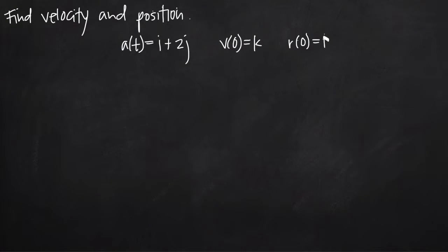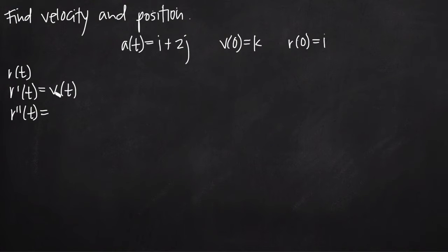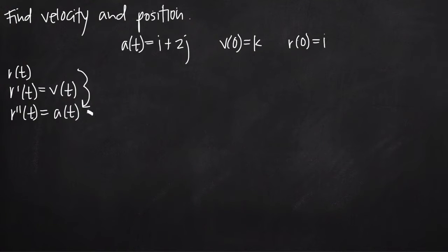So basically, this is an initial value problem. What we need to remember is that normally we start with a position function r(t), take its derivative r'(t) which equals velocity, then take the second derivative r''(t) which is the derivative of velocity, and we get acceleration. That's when we're working with derivatives, going in that direction. But here we've been given acceleration, so we're starting at the bottom and going in the opposite direction — taking the integral to find velocity, and then taking the integral again to find position.